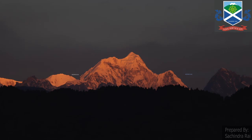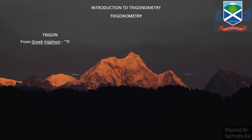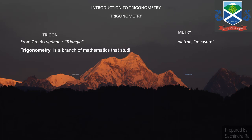Hello everyone, let's learn this chapter — Trigonometry, or Introduction to Trigonometry. The word trigonometry comes from the Greek word: the first part, trigon or trignon, meaning triangle, and the second part, metri or metron, means measurement. So trigonometry is a branch of mathematics that studies relationships between side lengths and angles of triangles, or we can simply say it deals with the measurement of sides of a triangle and the angles.